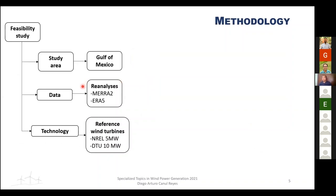In broad terms, the methodology consists of the superimposition of geographical and power production restrictions to identify specific potential zones for offshore wind power development, followed by a seasonal capacity factor analysis at the chosen points. The first part covers the feasibility study for offshore wind, including the study area, data, and technology.